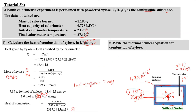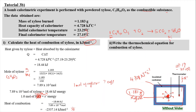Now we write the thermochemical equation for the combustion of xylose. By definition, the enthalpy of combustion means 1 mole of xylose is burned in excess oxygen to produce carbon dioxide and water — it is key that this involves exactly 1 mole. Balancing: C5H10O5 has 5 carbons, giving 5CO2; it has 10 hydrogens, giving 5H2O.